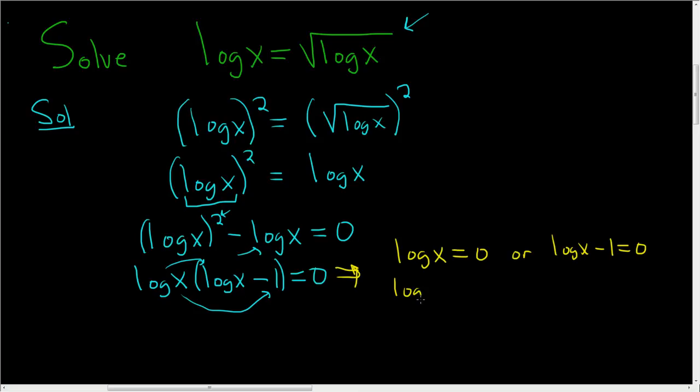So we have log x = 0, and log x = 1. Log x has a base of 10, so let's exponentiate both sides using base 10. This gives us x = 10⁰ = 1, and this gives us x = 10¹ = 10.